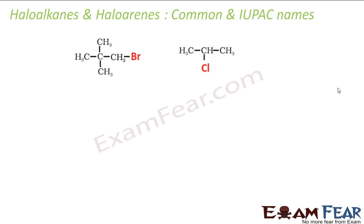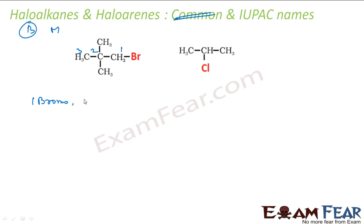Let's take more examples where we write only the IUPAC name. Number it 1, 2, 3. I have a bromo group and a methyl group. B comes before M alphabetically, so I write bromo first. At position 1 I have bromo, at position 2 I have two methyls — so 2,2-dimethyl. The longest chain has 3 carbons — propane. So the IUPAC name is 1-bromo-2,2-dimethylpropane.